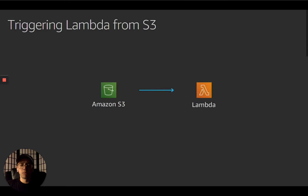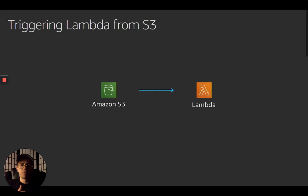S3 to Lambda is a powerful combination when designing serverless solutions. When an object is created, copied, or deleted in S3, S3 can invoke Lambda. You configure notification settings on a bucket and grant S3 permission to invoke a function. It invokes asynchronously and can match on an object key, prefix, or suffix. If you need to fan out, you can also link this to SNS.